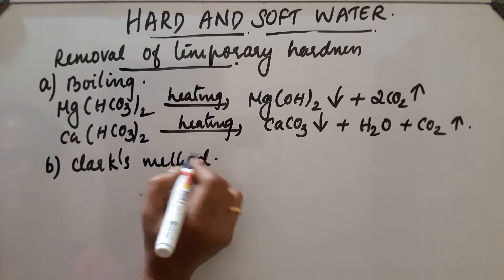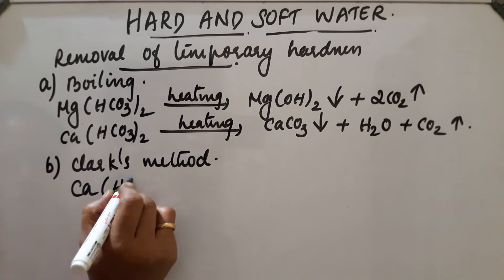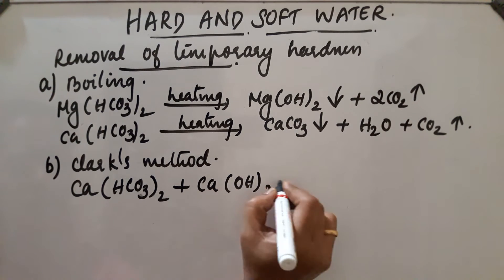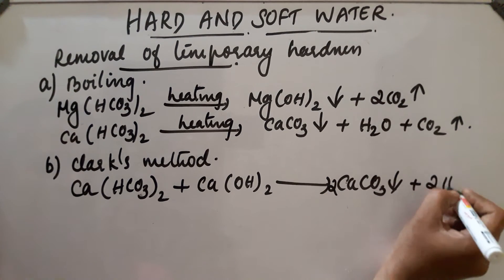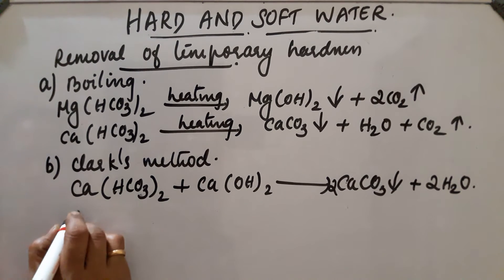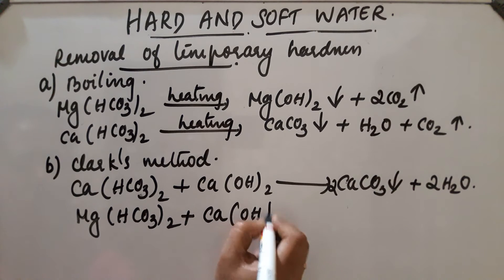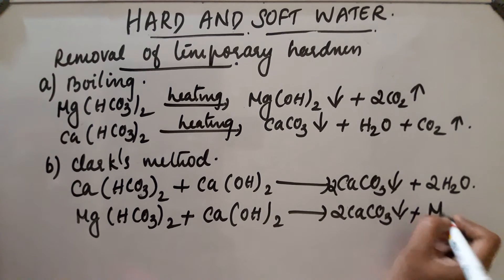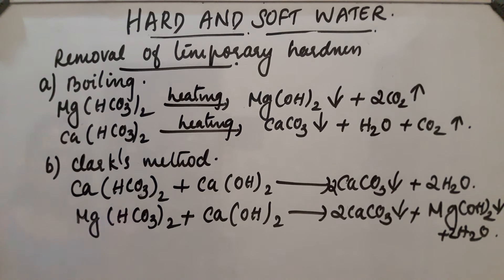In Clark's method, a calculated amount of lime (calcium hydroxide, Ca(OH)2) is added. Calcium bicarbonate in hard water, on reaction with calcium hydroxide, gives calcium carbonate precipitate and H2O. Similarly, magnesium bicarbonate present in hard water, on reaction with calcium hydroxide, gives calcium carbonate precipitate, magnesium hydroxide precipitate, and water. These precipitates can be removed by filtration. These are the two methods to remove temporary hardness.